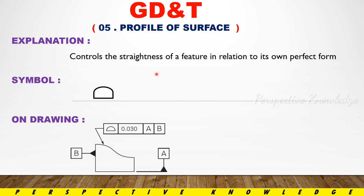How do we use this profile of surface? This is a CAD design file. We have to measure the output value. When you look at the engineering drawing, you have to measure the feature control frame. First, the profile of surface symbol is shown. Then you have the tolerance value of 0.03. There is a relative datum — Datum A and Datum B.